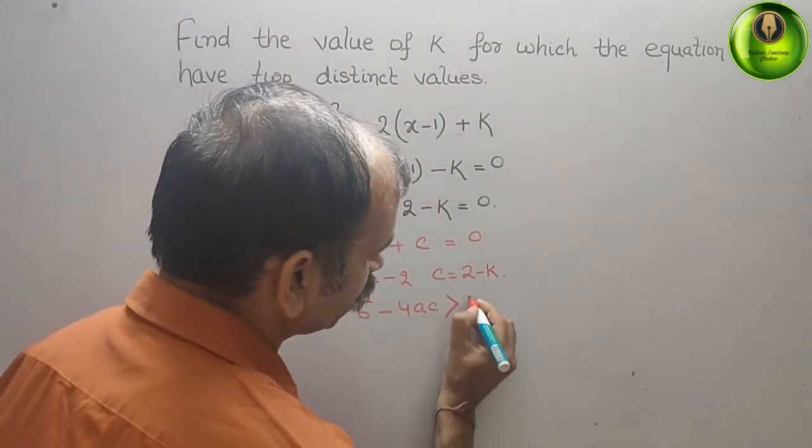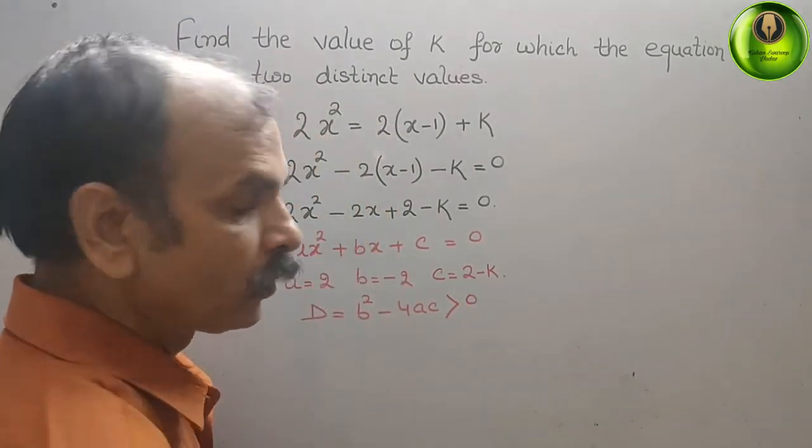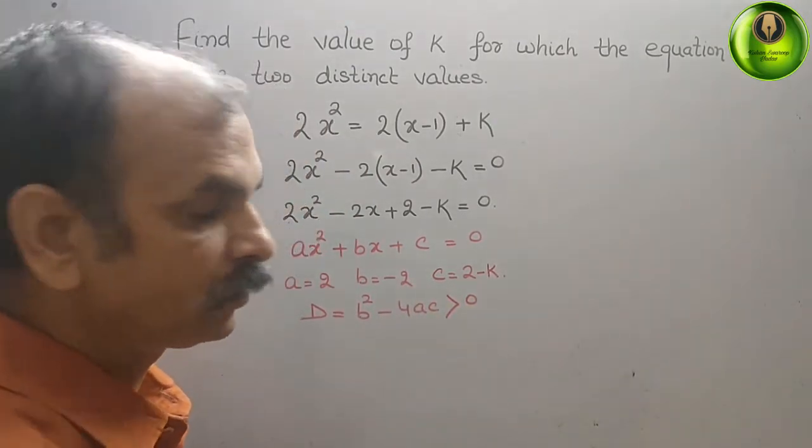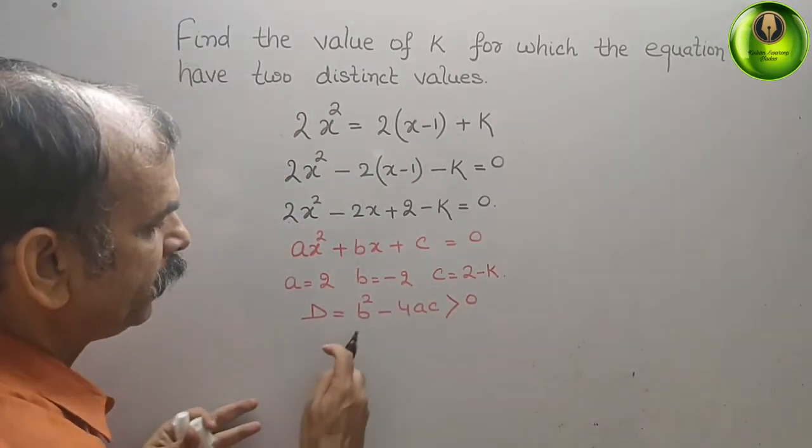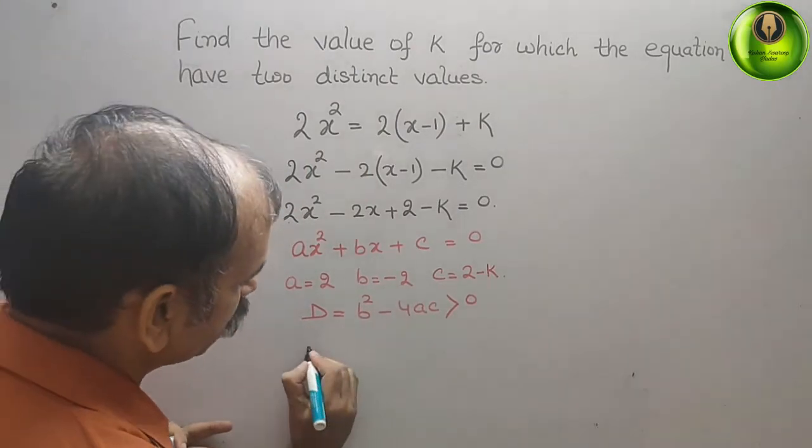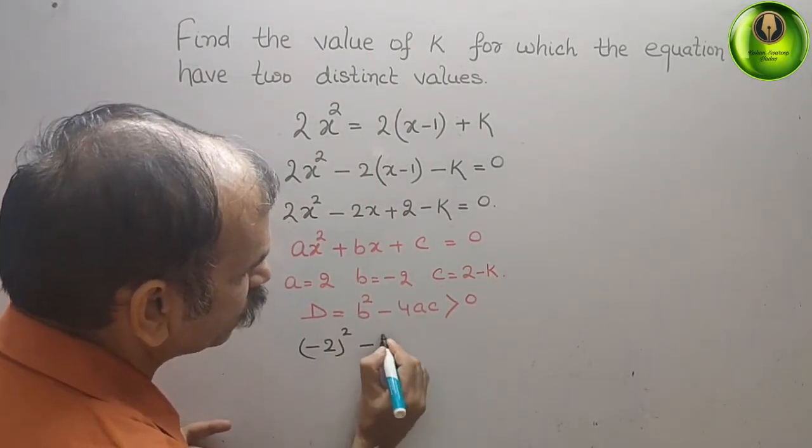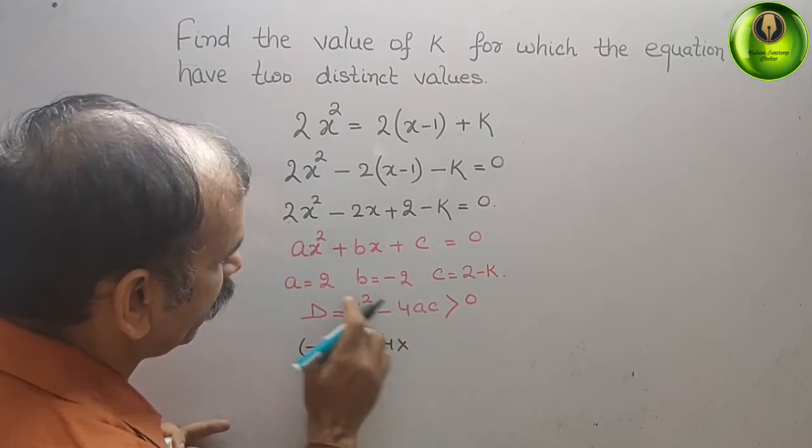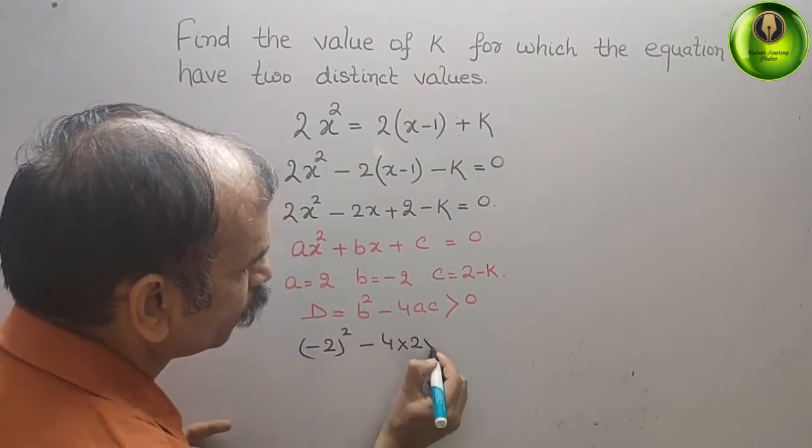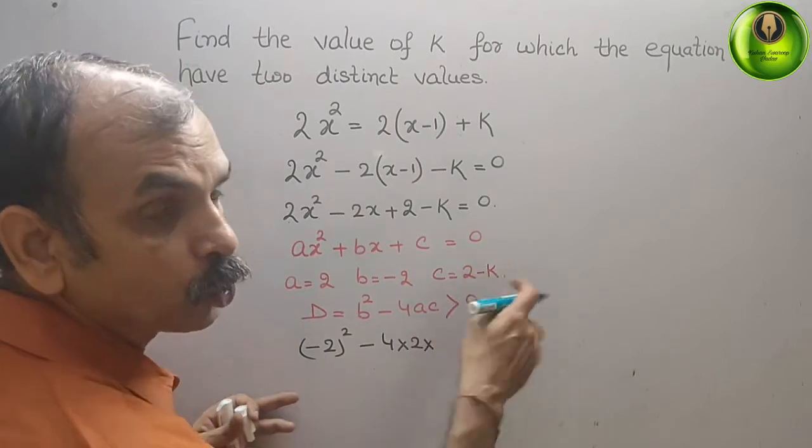Now substitute the value here. What we will get: b² that means (-2)² minus 4 into a, a is 2, into c, c is (2-k).